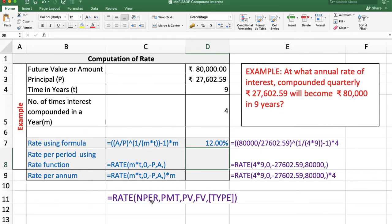In the RATE function, first we take NPER (number of periods). PMT is not present in this question, so PMT is 0. PV is present value, always negative. Then future value or amount. Type is always with PMT, so we leave it.